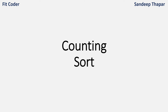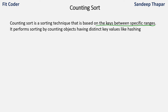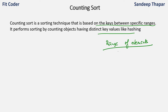Hi everyone, in this video we will discuss counting sort. Counting sort is a sorting algorithm based on keys between specific ranges. If we know the input array is between a certain range — we know the minimum and maximum value — then counting sort is useful. It performs sorting by counting objects having distinct key values, like hashing. We should know the range of the elements, and then based on some arithmetic operations, counting sort sorts the input array.